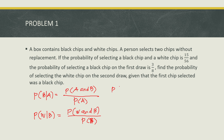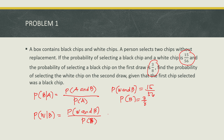The probability of white and black is 15/56, and the probability of selecting a black chip is 3/8. So we compute 15/56 divided by 3/8, which equals 5/7. Therefore, the probability of selecting a white chip on the second draw given that the first chip selected was black is 5/7.